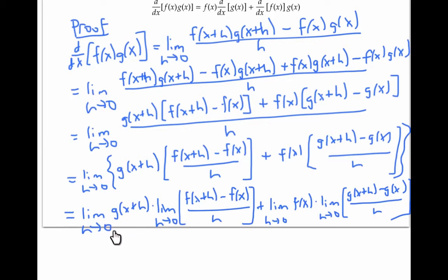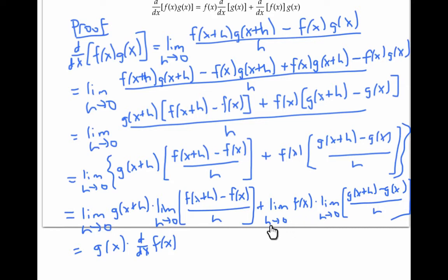This first limit is just equal to g(x) because g is a continuous function — g is continuous because by assumption it is differentiable, so it has to be continuous. This second limit you'll recognize as the definition of the derivative of f, so that limit exists and equals d/dx of f(x). The third limit — well, f(x) has nothing to do with h, so that limit is just f(x). And finally, the fourth limit is the derivative of g. And we've done it — after a minor rearrangement, you'll see that this expression is exactly the same as this expression, just with the order of the terms switched around.